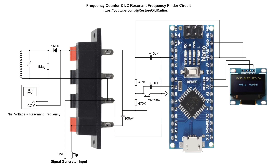Hi folks, thanks for joining me. This is a simple circuit I put together to find the resonant frequency of a parallel LC circuit. It works really well. Here I'm leveraging Arduino for the frequency counter.